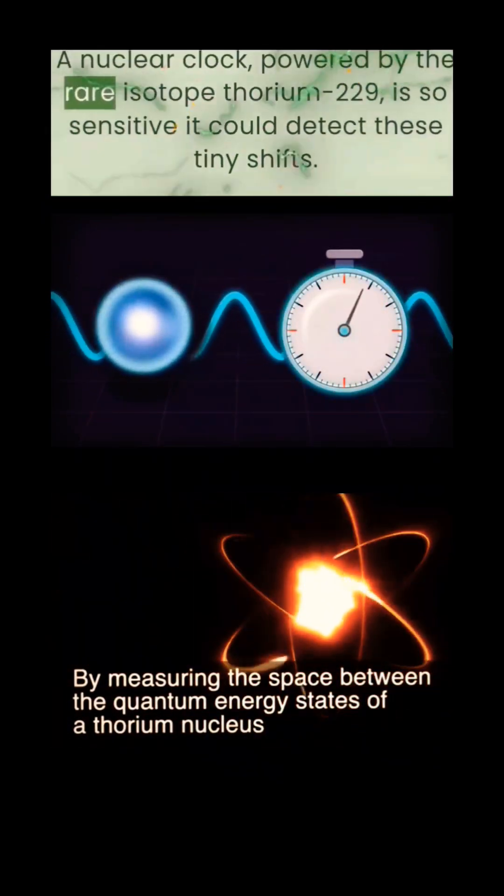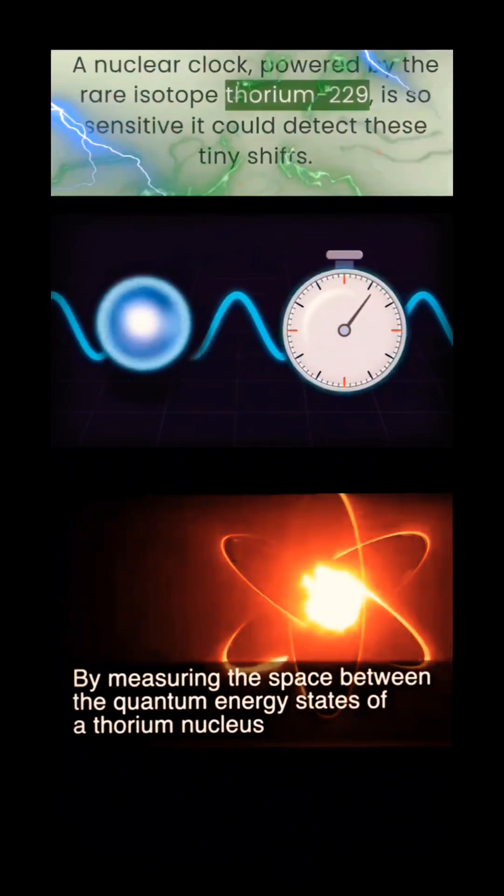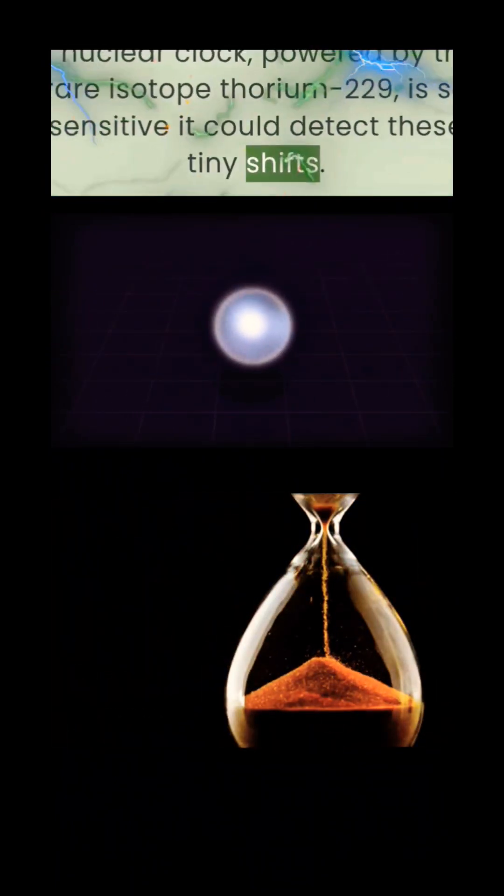A nuclear clock, powered by the rare isotope thorium-229, is so sensitive it could detect these tiny shifts.